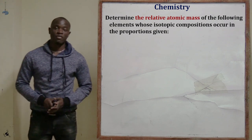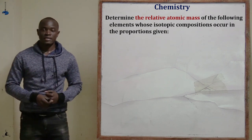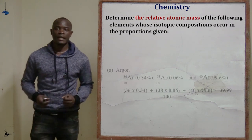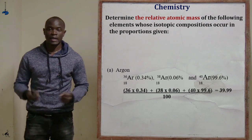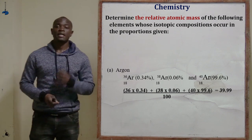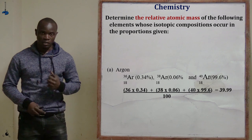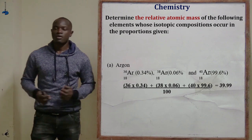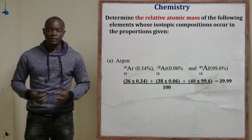Let's now look at question number four. This question is asking to calculate the relative atomic mass of the following elements below. The first element we see is argon, which has an atomic number of 18.